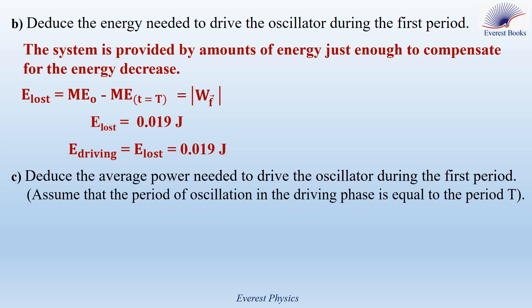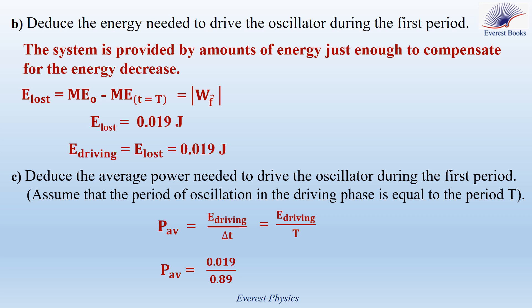Part C: deduce the average power needed to drive the oscillator during the first period. Assuming the period in the driving phase equals T, the average power equals the driving energy divided by the time (one period). So average power = 0.019 joules ÷ 0.89 seconds = 0.021 watts.